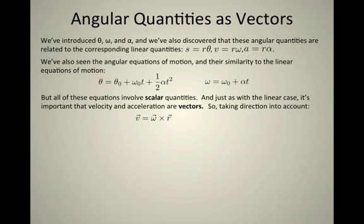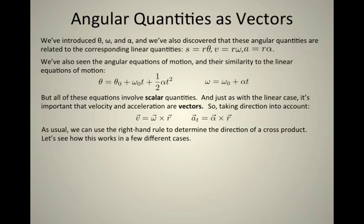It turns out the connection is that there's a cross product. So we have to go back to our recollection of how cross products work. But it's not just a multiplication, V equals omega r, but it's actually V equals omega cross r. And the tangential acceleration is alpha cross r. As usual, there's a right-hand rule that you can do to help compute cross products. And let's examine how this works.